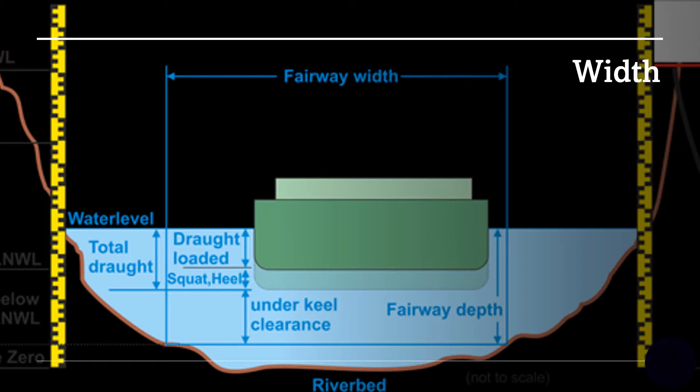A body of water will be considered navigable if it's wide, deep, and calm enough for a water vessel to pass safely. Waterways can be rivers, canals, lakes, or other stretches of water that are suitable for navigation.